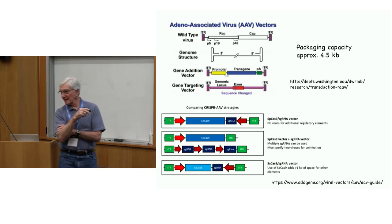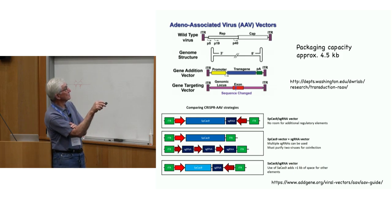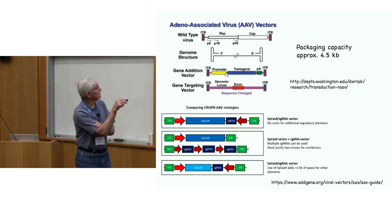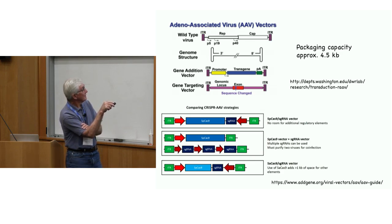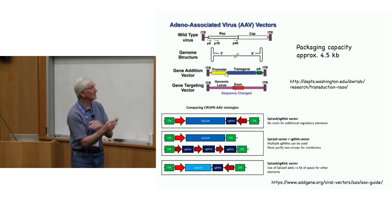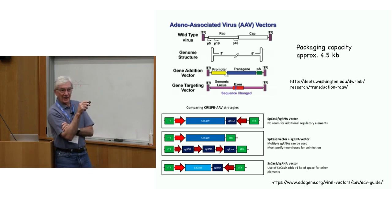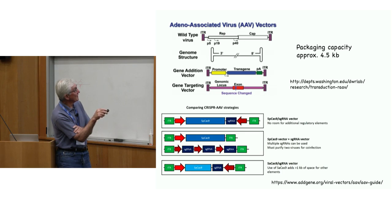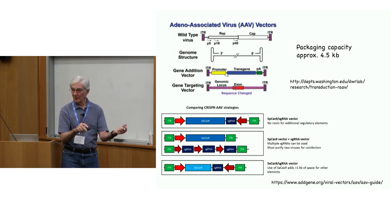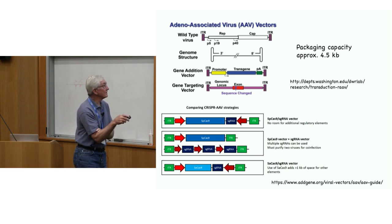The Staph aureus Cas9 is smaller, as is the Campylobacter Cas9. The CPF1 proteins are about 1,300 amino acids — similar in size to pyogenes Cas9. You can use pairs of viruses: one to express Cas9 and another to express guide RNAs, allowing multiplexing. One solution is to minimize the promoters used for both Cas9 and guide RNA expression, making it possible to fit pyogenes Cas9 and a guide RNA into a single AAV vector.